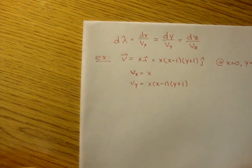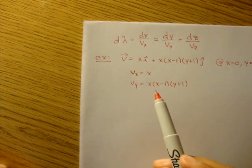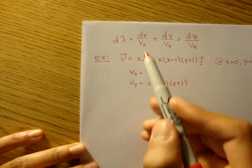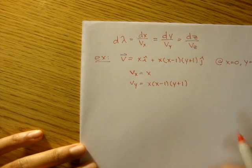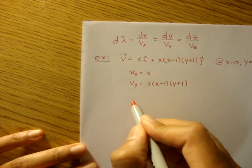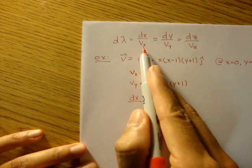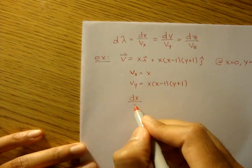So what we do is just plug these into our streamline equation. So we're going to get, if we plug it in, dx over vx, which is just x.